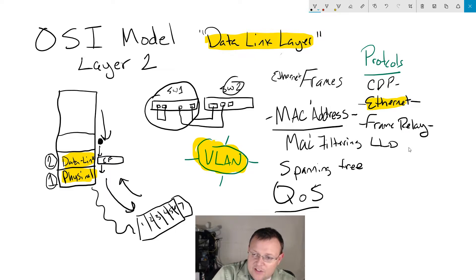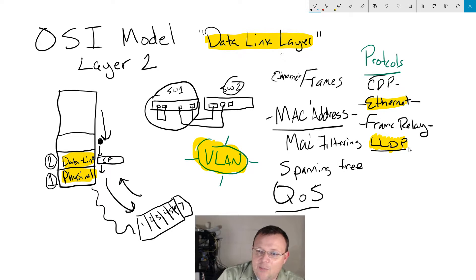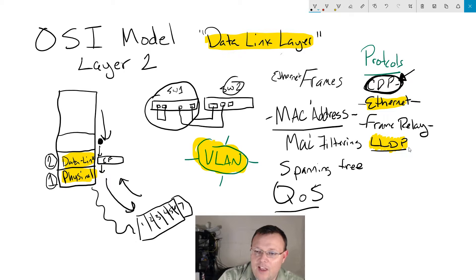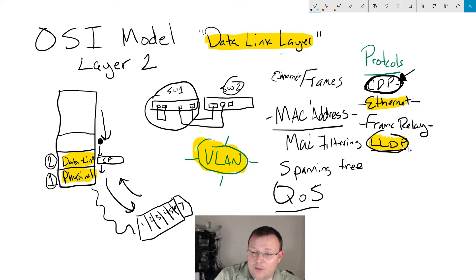LLDP — the Link Layer Discovery Protocol — is the standard where devices can see each other and share a little bit of information: 'I'm this device, you're connected to this interface.' CDP is Cisco's proprietary discovery protocol, but I have seen some other manufacturers' devices actually doing CDP. I don't know all the legal ins and outs, but I would more than likely use LLDP.